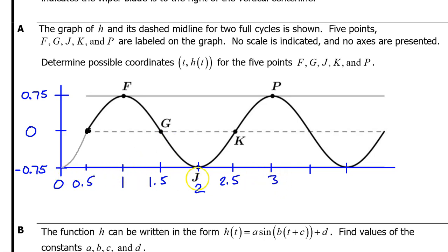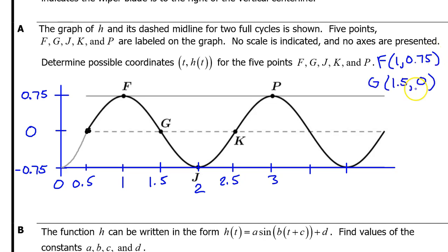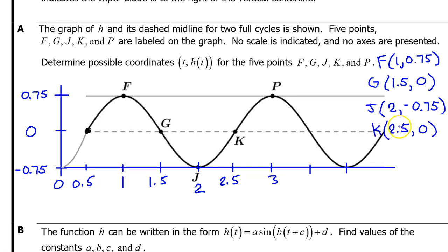We now have input and output values for all five points. Point f is at (1, 0.75). Point g is at (1.5, 0). Point j is at (2, −0.75). Point k is at (2.5, 0). And point p is at (3, 0.75).